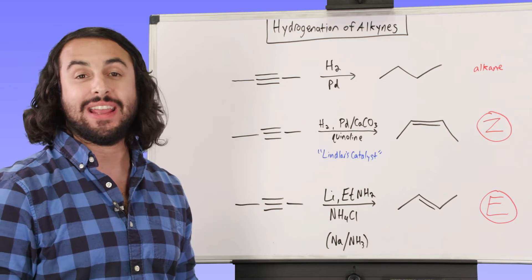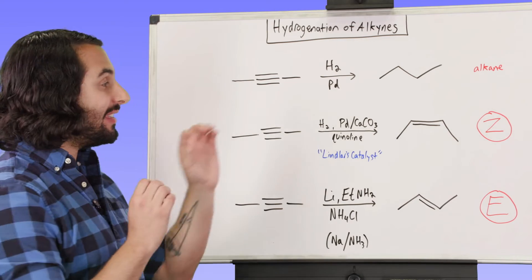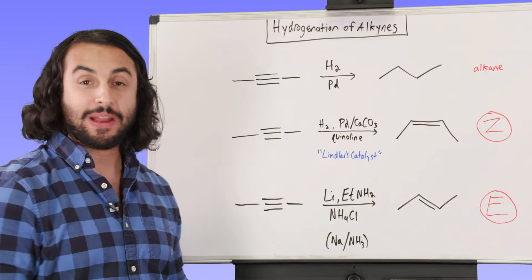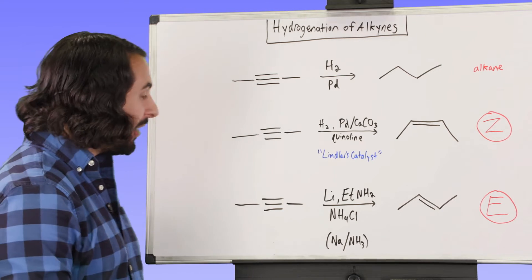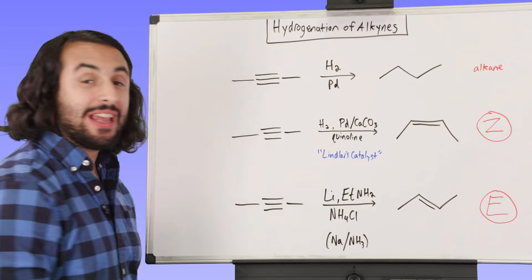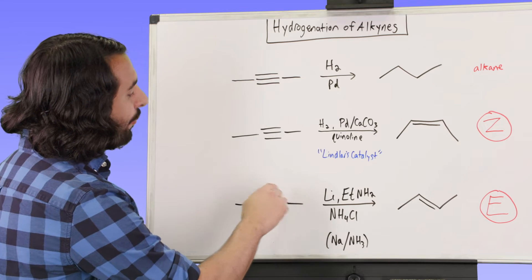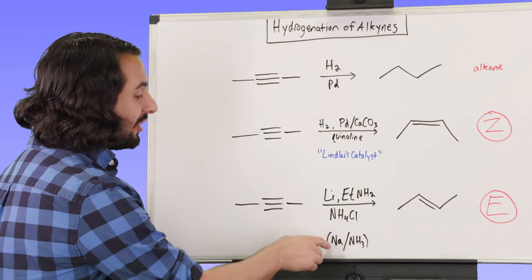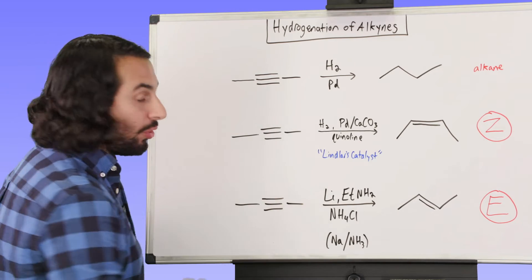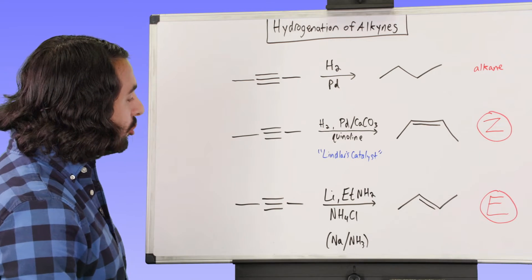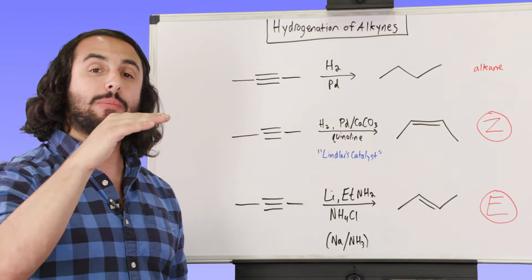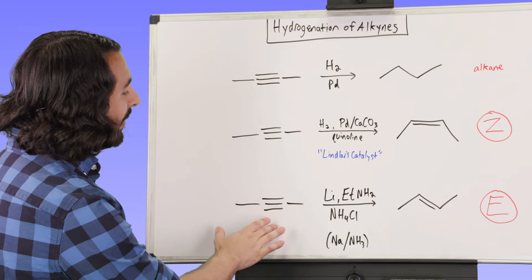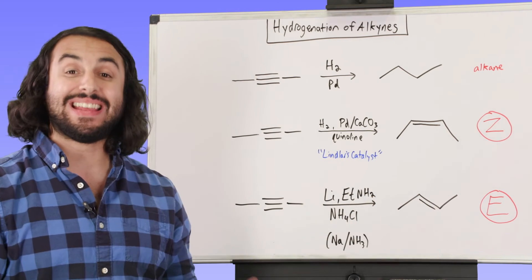That is one thing we could do deliberately in a synthetic pathway if we have an alkyne and want to get a Z alkene to then do some other chemistry. Obviously if we have a way to get the Z alkene, we also want a way to get the E alkene, depending on what we're trying to do in our synthetic pathway. Starting with that same alkyne, if we have lithium and ethylamine and ammonium chloride — an alternate way commonly seen is sodium and ammonia — the key is one of these alkali metals, lithium or sodium. It will stop at the alkene functional group level and specifically give the E alkene.